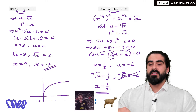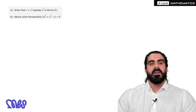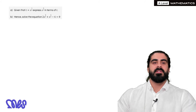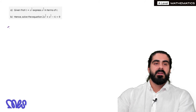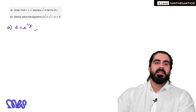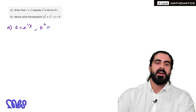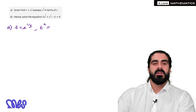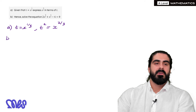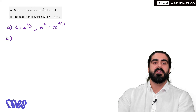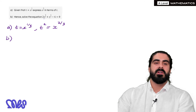Next one. Given that t equals x to the power of a third, express x to the power of 2 thirds in terms of t. We can see that if t equals x to the power of a third, then if we square that and multiply the powers, we get x to the power of 2 thirds, which equals t squared. Hence solve this equation. We have x to the power of 2 thirds and x to the power of a third in the equation, so if we square the latter we get the former.